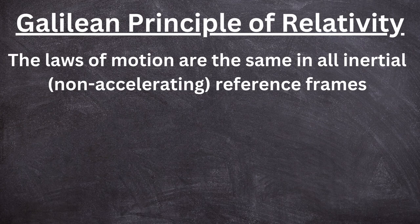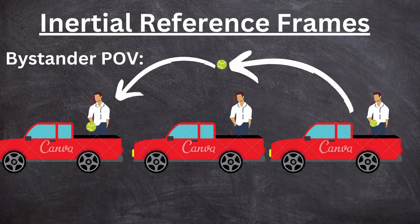The Galilean principle of relativity states that all laws of physics are the same in every single inertial reference frame. This means the kinematic equations work in every inertial reference frame. In the car, I can observe the ball going through a parabolic path and make calculations using the same kinematic equations as an outside observer would use.